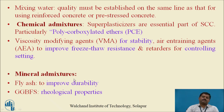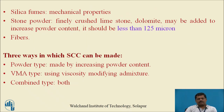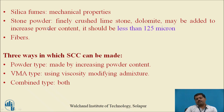Next are mineral admixtures. Self-compacting concrete must flow under its own weight, so there must be higher powder content. Fly ash is used to improve durability. Ground granulated blast furnace slag is used to improve rheological properties. Silica fume, a fine powder, is used to improve mechanical properties like compressive and flexural strength. Stone powder or finely crushed limestone can also be used, provided the particle size is less than 125 microns.